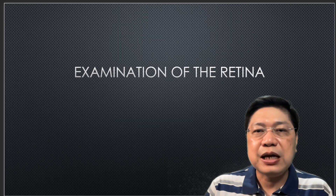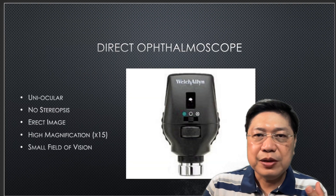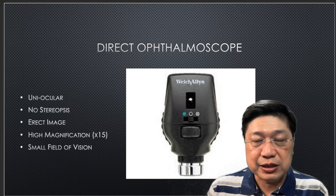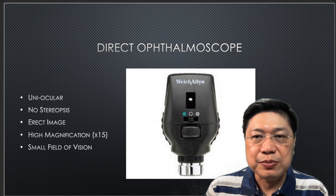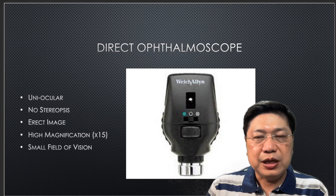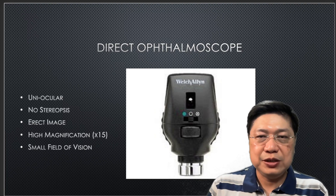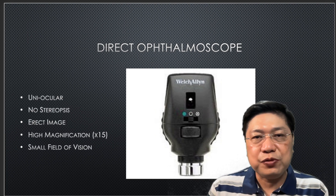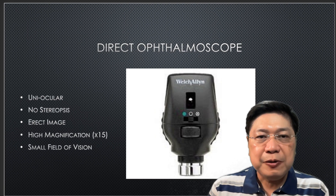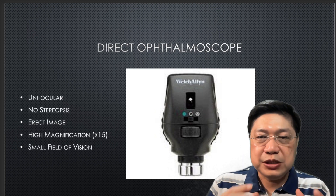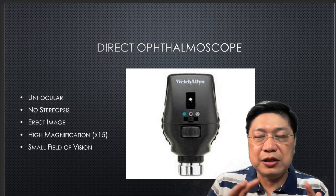So how do you examine something that's at the back of your patient's eye? The most obvious would be using a direct ophthalmoscope, which is uniocular — meaning you can only use one eye at a time — and since you're using just one eye, it doesn't give you stereopsis, meaning you don't see depth. You see something that's flat. It's an erect image — what's on top is at the top and what's at the bottom is at the bottom. It has a high magnification of about 15 times normal, and it has a small field of vision because of that high magnification — so it's a trade-off.